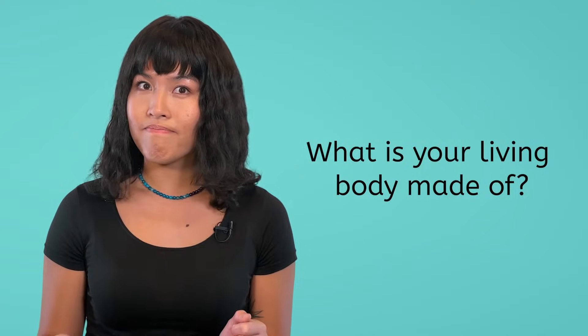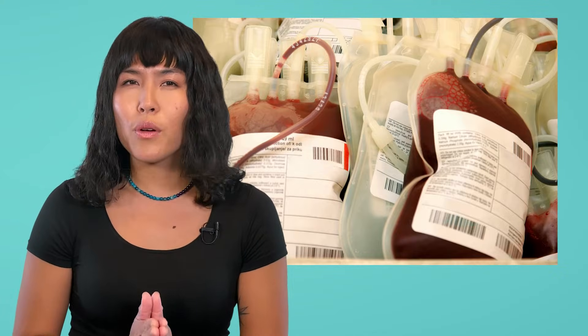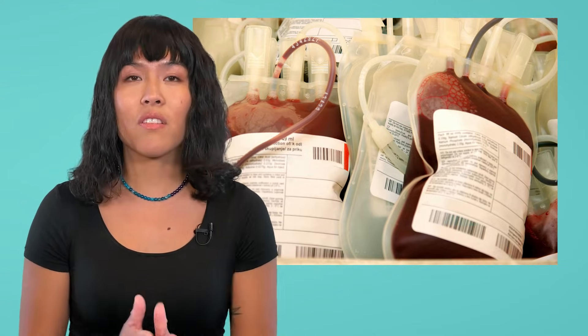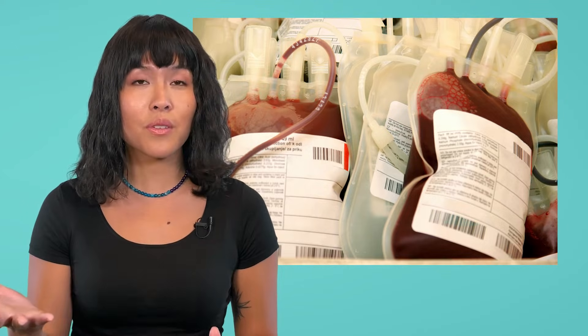Now that we have our living examples, we can begin unit two with a question: what is your living body made of? Maybe you're thinking of body parts like your head, arms, and fingers, or maybe you're thinking about the materials your body is made of, like bone, skin, and blood. If we focus on these materials, what are they made of? What are the building blocks of blood? Are they the same as the building blocks of bone or even other living materials, like leaves? And are living materials made of the same building blocks as non-living materials, like a rock or a smartphone? The answer is yes and no, and we'll need some basic chemistry to understand why.